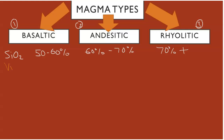Silica dictates viscosity. Basaltic is going to be lower viscosity, so it will be more fluid and flow easier. Now, basaltic lava is still around 10,000 times more viscous or thicker than regular water (H2O), so it is still a very thick liquid — but it is the most fluid of the three types.